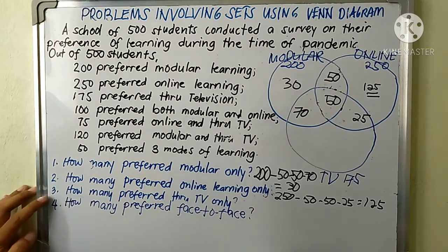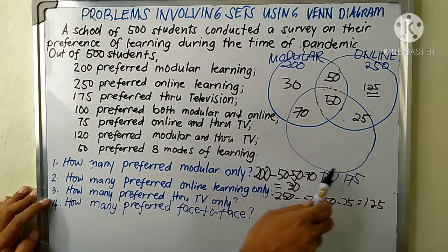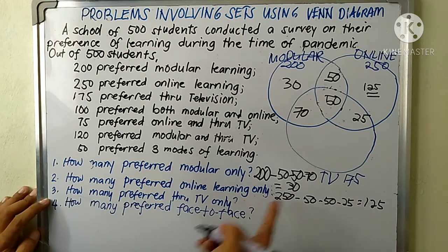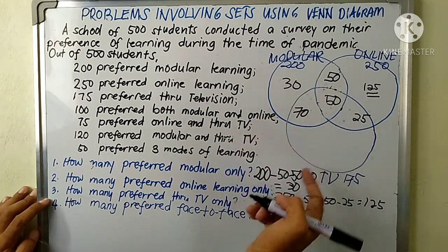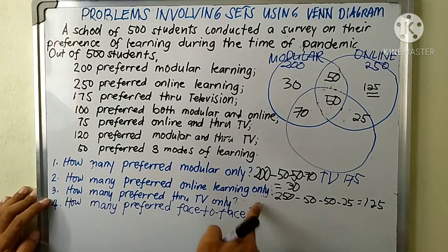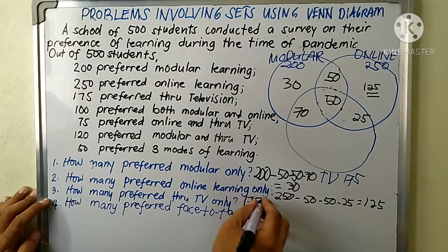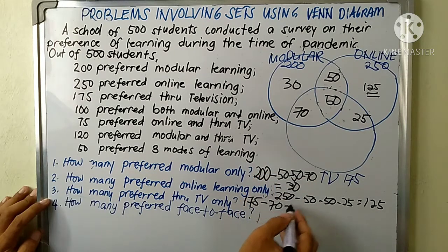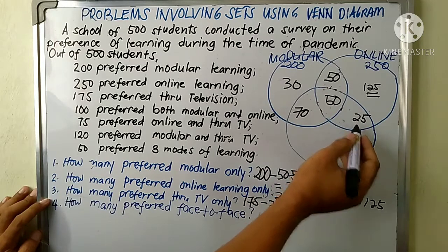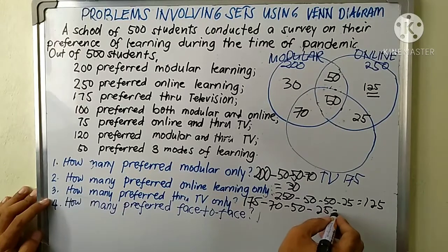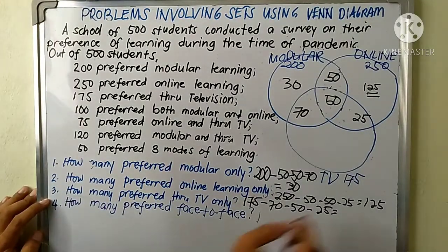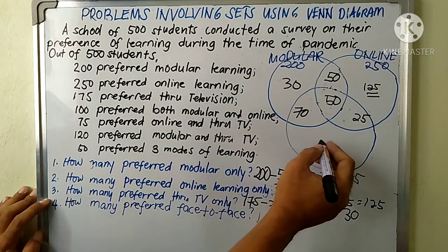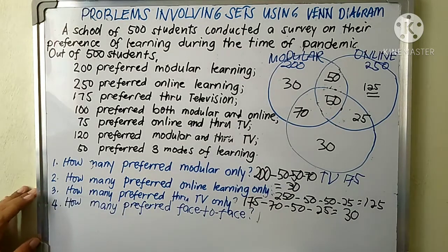Question number three: how many preferred through television only? For the TV circle, we calculate: 175 minus 75 minus 70 minus 50 minus 25, and the answer is 30. There are 30 students who preferred through television learning only.